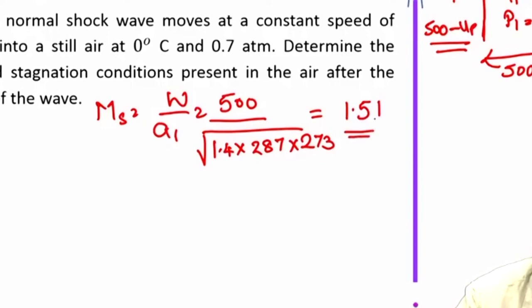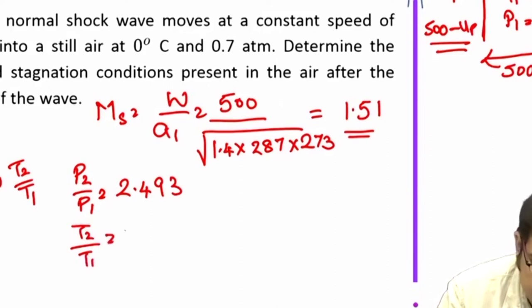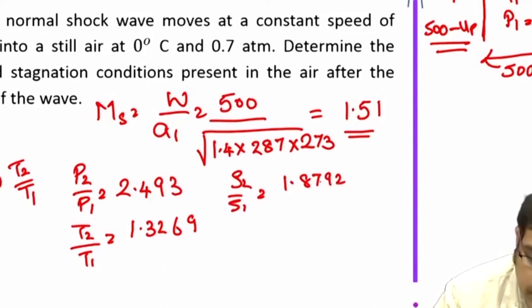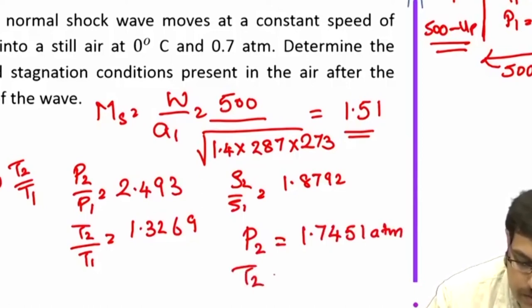Let us see what is the Mach number of this shock. MS is W by A1 which is 500 by square root of 1.4, 287 multiplied by 273 Kelvin. This is 1.51. This is the Mach number of the shock. Once you know Mach number you can find out P2 by P1 and T2 by T1. P2 by P1 is 2.493 and T2 by T1 is 1.3269. Rho 2 by rho 1 is 1.8792. Once you know these ratios it is straightforward to get P2, 1.7451 atmospheres, and T2 is 362.24 Kelvin.